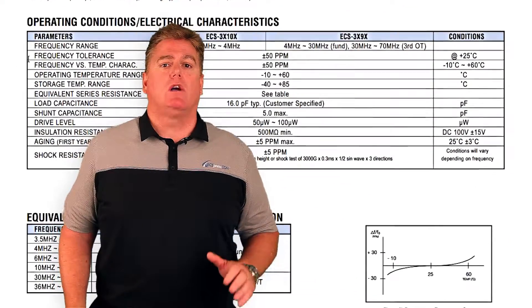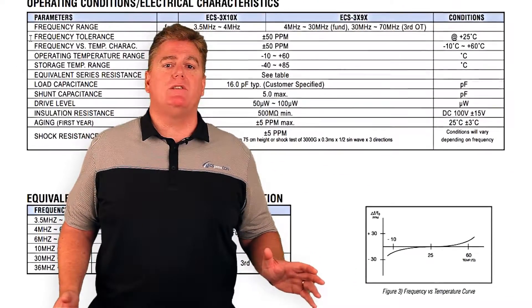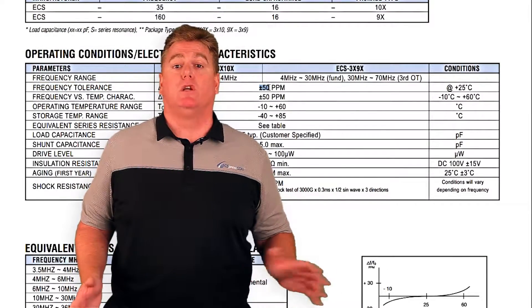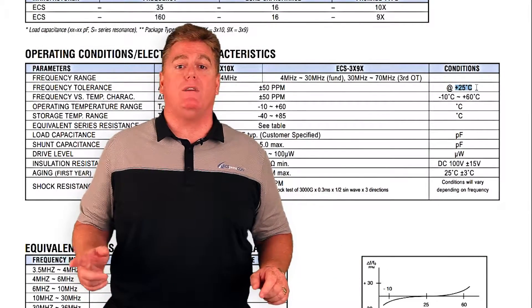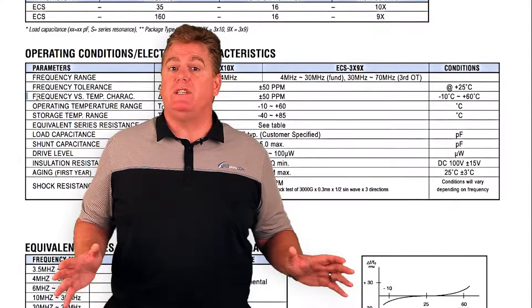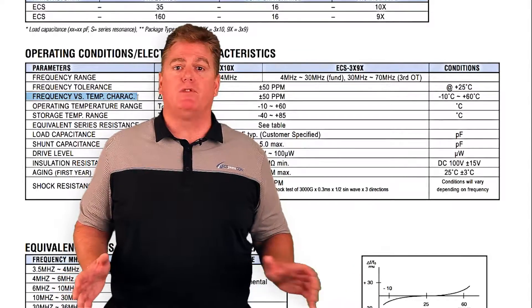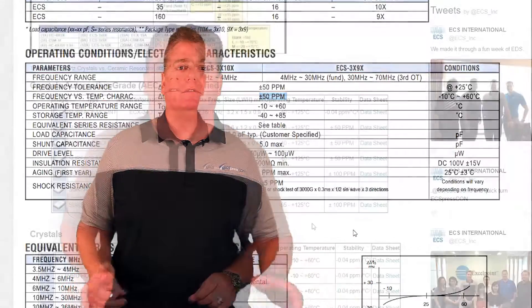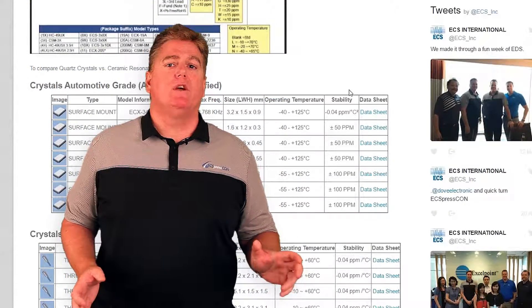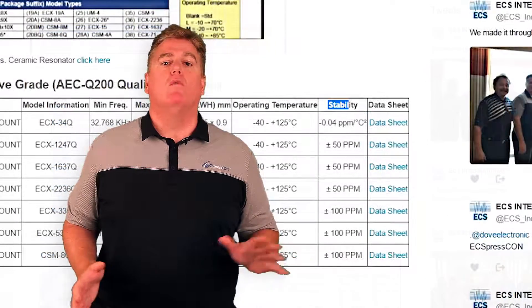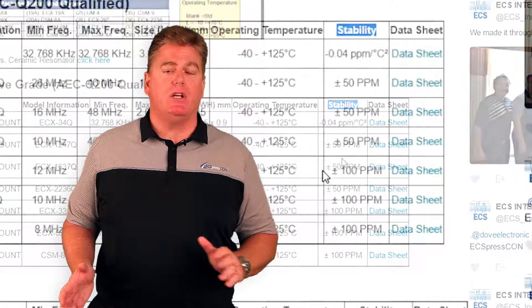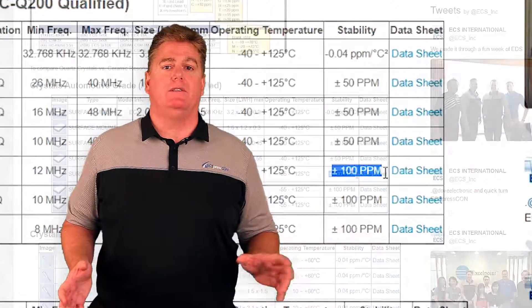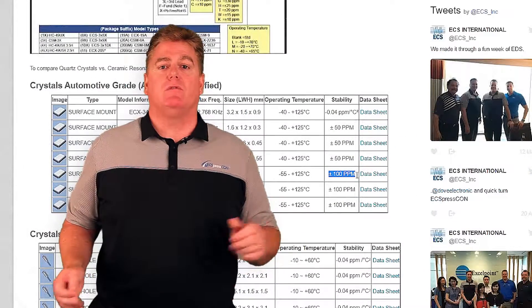For instance, a crystal may be specified as having a frequency tolerance of plus or minus 50 ppm at 25°C and a frequency stability of plus or minus 50 ppm over an operating temperature range. This would give the crystal an overall stability and tolerance budget of plus or minus 100 ppm, or 0.01% potential frequency error.